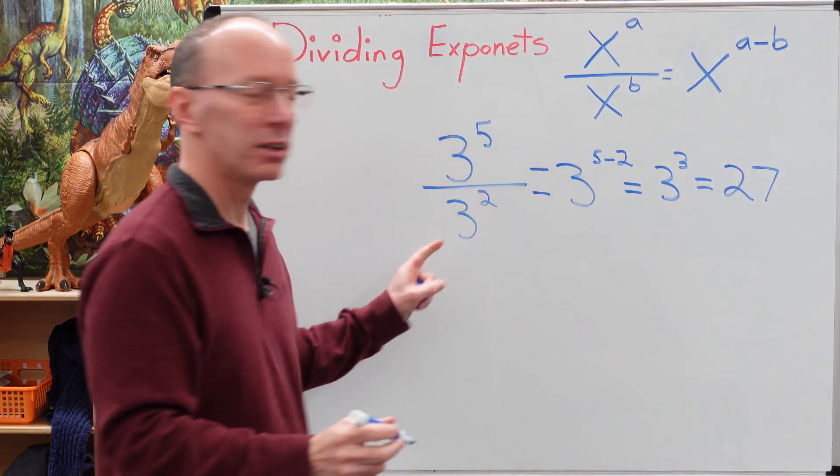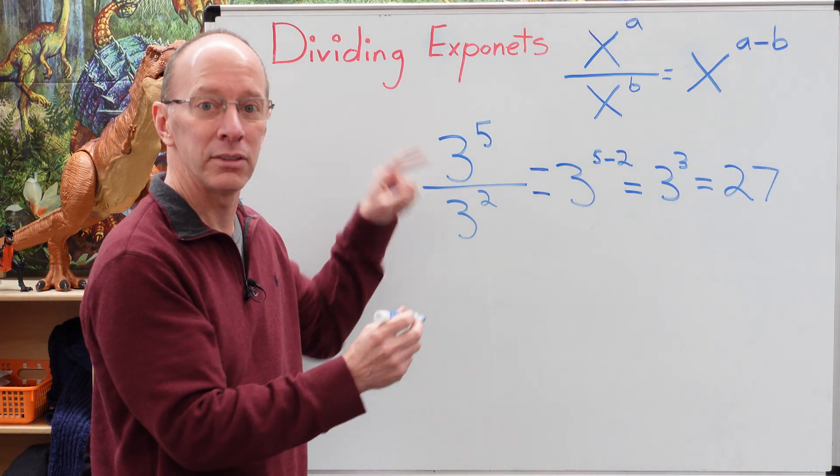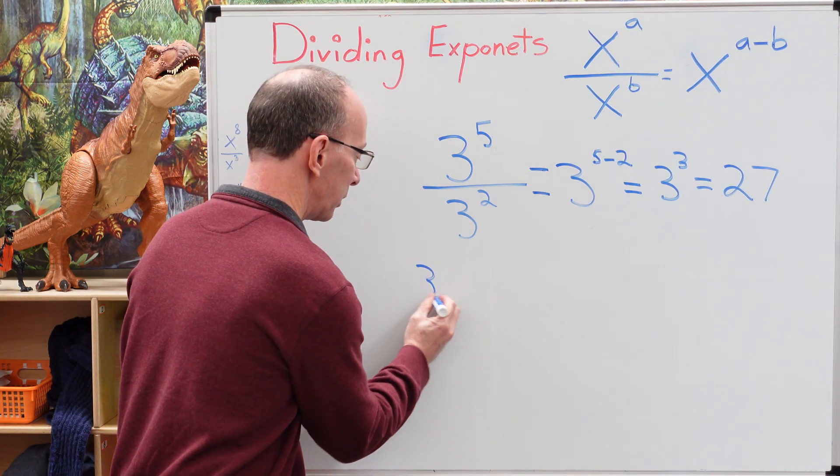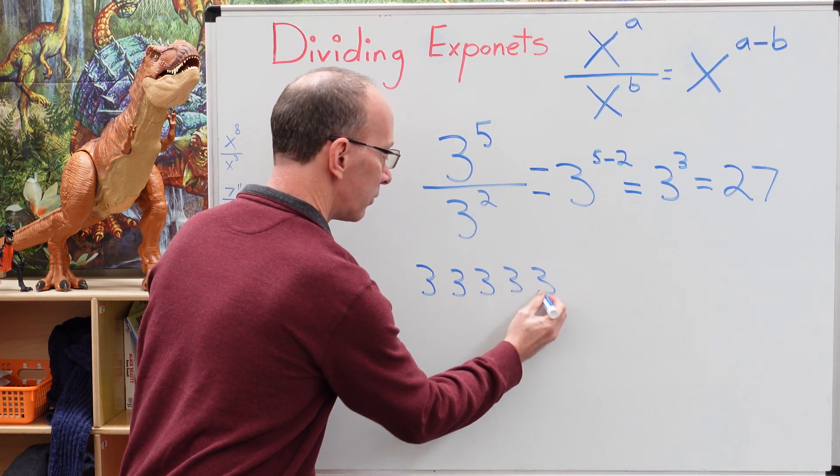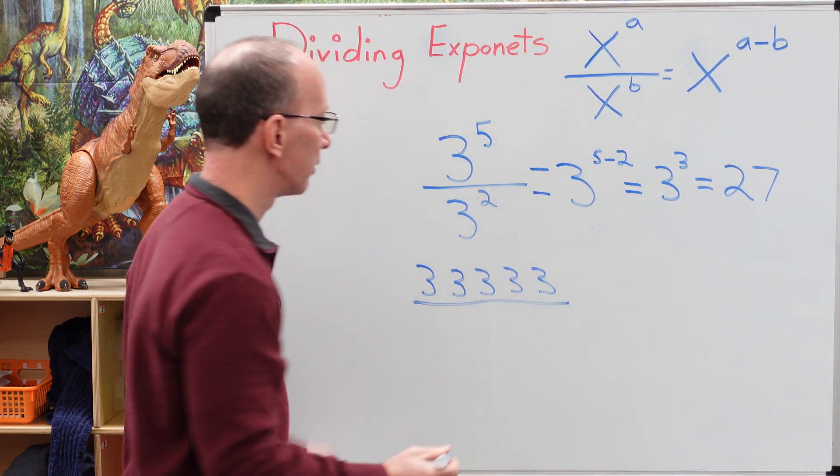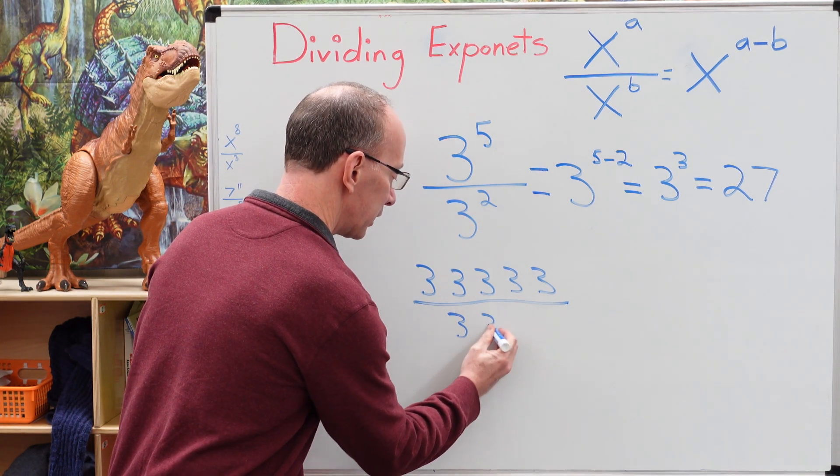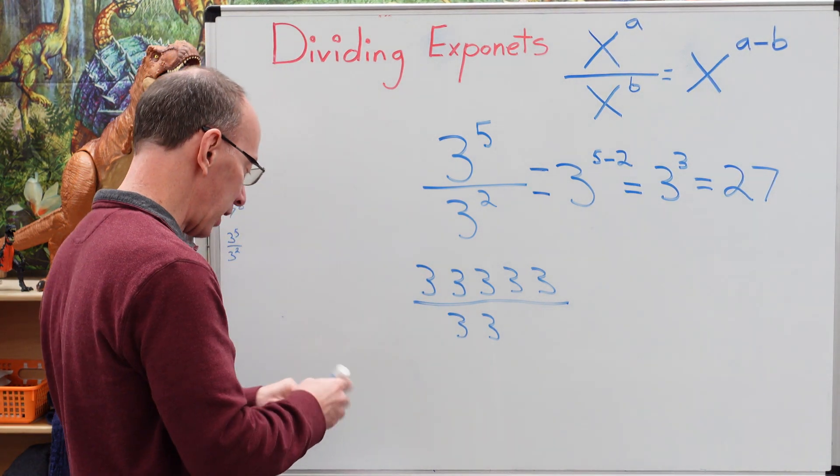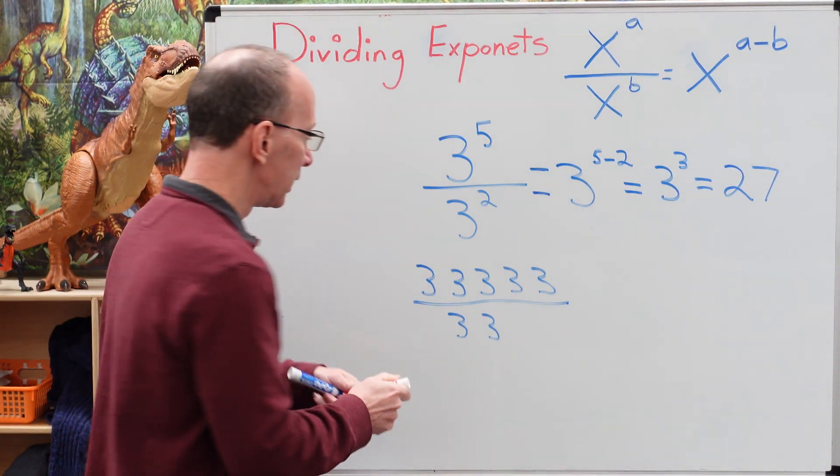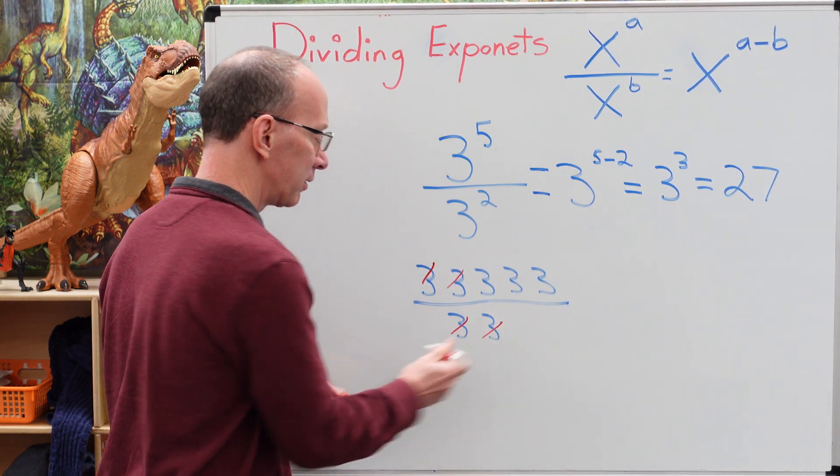And I just want to show you a real quick way to take a look at this. I could write 3 five times right here. So this would be 1, 2, 3, 4, 5. And then I would take these 3s and I would write that 2 times. 3 and another 3. All right. So I could go ahead and cross out the 3s that are the same here. I got 3 here and a 3 down here. 3 here, 3 down there.